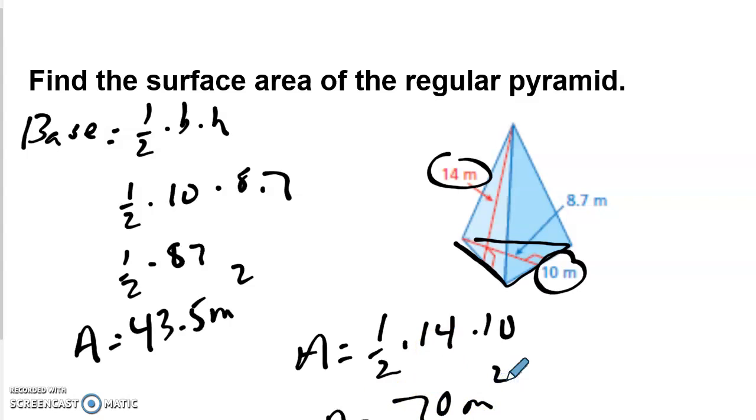But remember, that's just one of the faces of the pyramid. And since it's a triangular pyramid, we have 3. So we're going to take that, we're going to multiply by 3. That means that the lateral faces of the pyramid are 210 meters squared. So if we add our 210 meters squared to our 43.5, we're going to end up with surface area equals 253.5 meters squared all together.